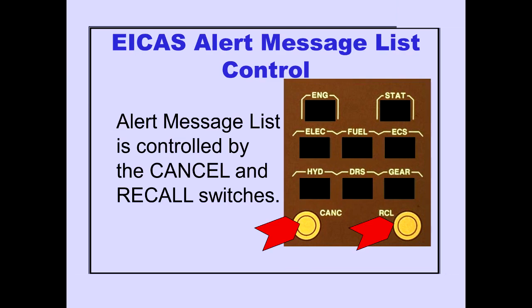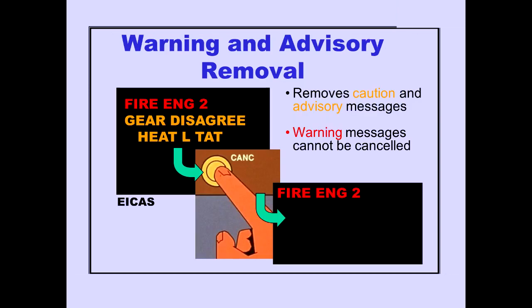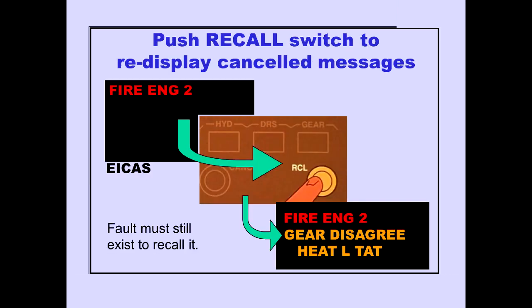The ICAST alert message list is controlled by the cancel and recall switches. Pushing the cancel switch removes the caution and advisory messages from the ICAST display. Warning messages cannot be canceled. Pushing the recall switch displays the caution and advisory messages that were removed with the cancel switch, if the respective faults still exist.